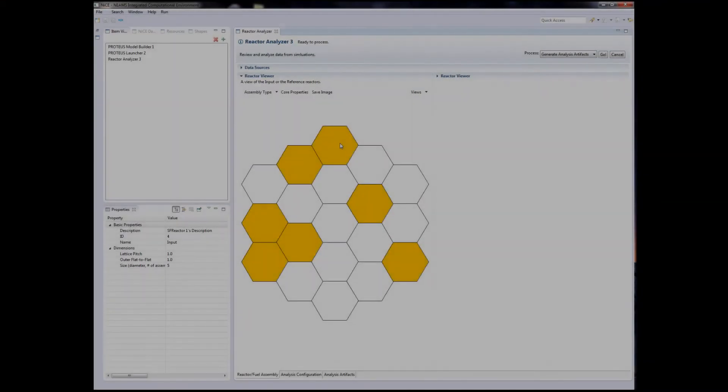Here we can see the hexagonal lattice of an SFR core. In our small test reactor here, the yellow assemblies are ones containing actual data. We can select one or several assemblies at the same time and explore their contents further for a more in-depth analysis of the Proteus simulation.